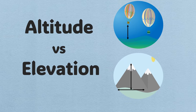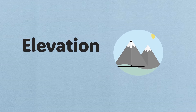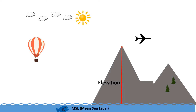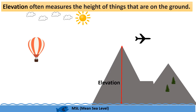Elevation often measures the height of things that are on the ground. Elevation is generally used for points on the earth's surface such as mountains or hills. It refers to the height of land features — for example, mountains, hills, and valleys on the earth's surface.